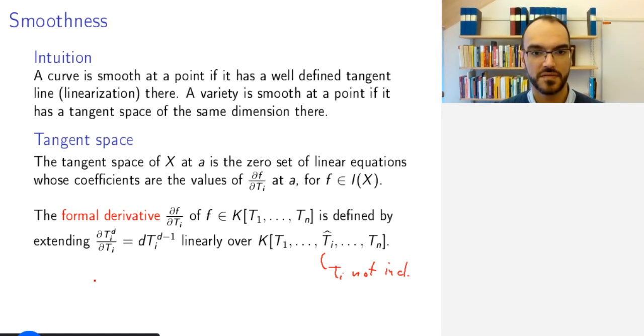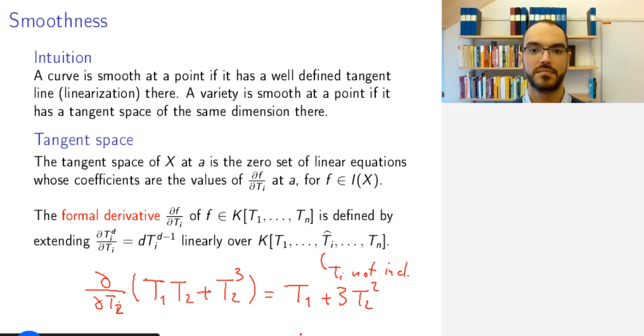So, in particular, say if I want to take the derivative of t2 of t1 t2 plus t2 to the power of 3, this will be t1 plus 3 t2 squared, as you would expect.